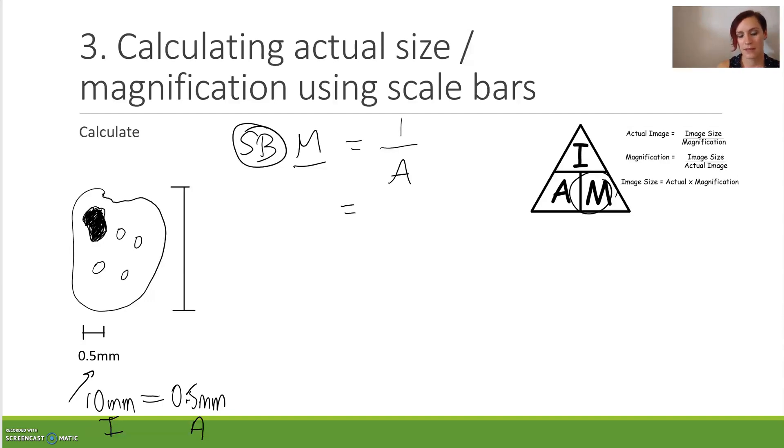We can do that by saying, well, our image length of our scale bar is 10 millimeters, and that is representing 0.5 millimeters. Now note how my units are exactly the same. That's a really important point. 10 divided by 0.5 gives us 20. So my magnification is only times 20.